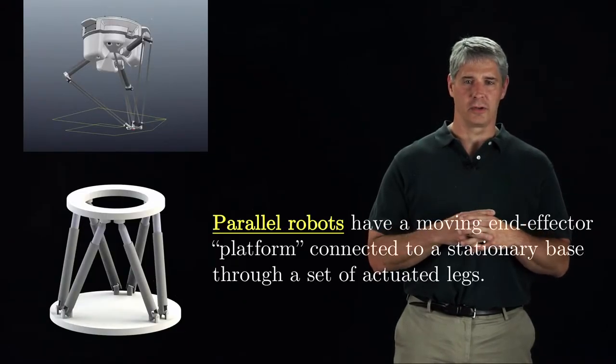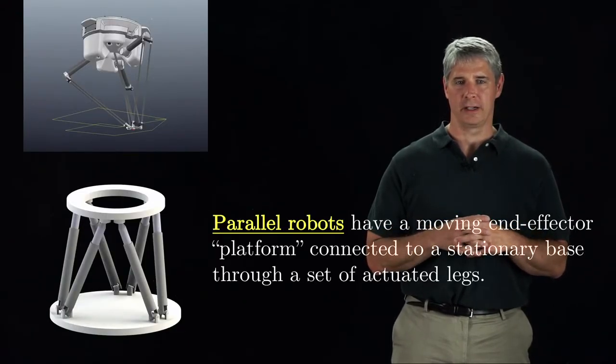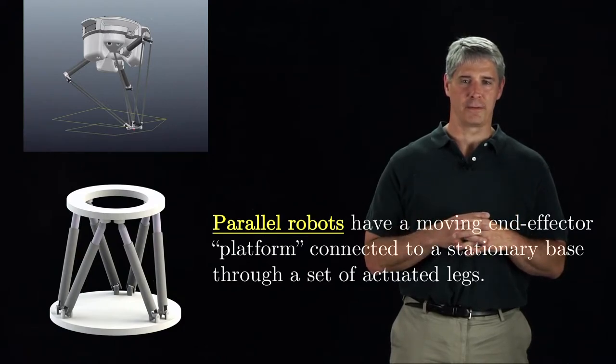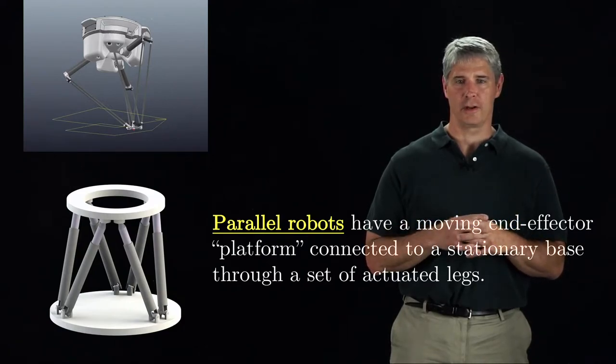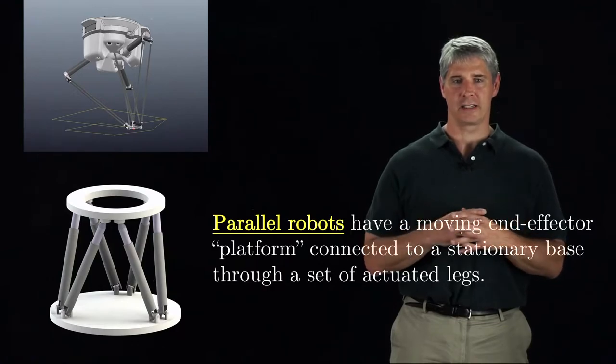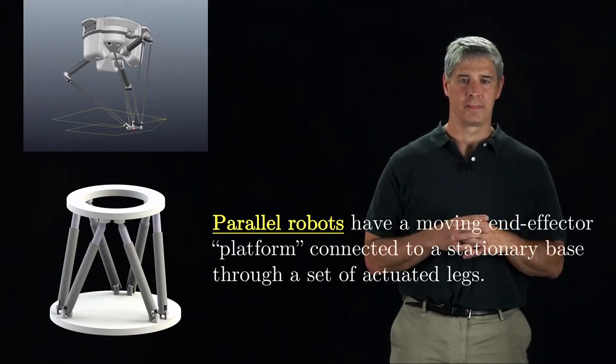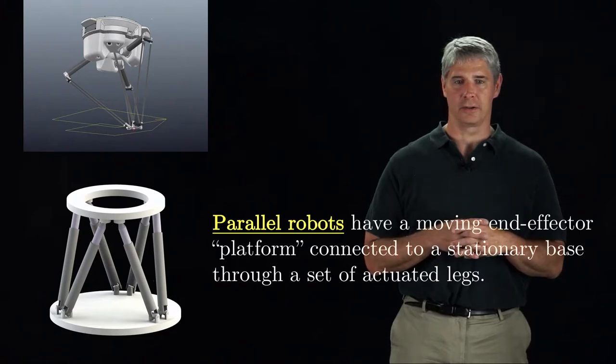The delta robot and the Stewart platform are examples of parallel robots. A parallel robot is a specific type of closed chain which consists of a moving platform attached to a base through a set of actuated legs. For the rest of this video, I'll focus on parallel robots.